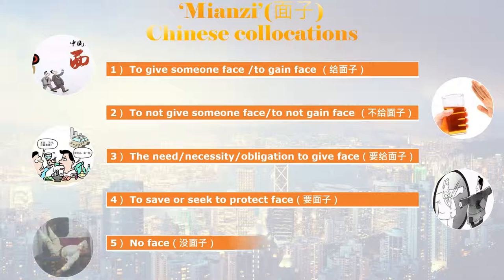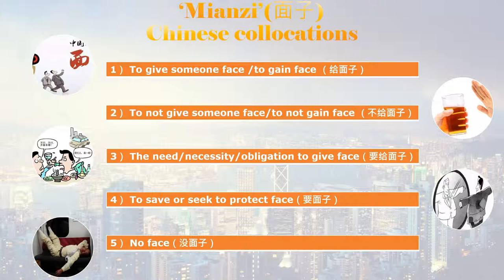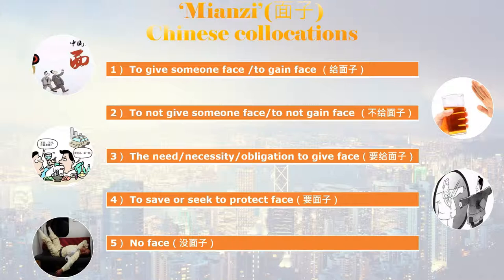Number five: 没面子, which means 'having no face,' in the sense that your actions have cost you your self-image, self-dignity, and self-reputation. So if you're completely intoxicated in public, like this guy over here, or if you're going to a meeting in that particular state, you're considered to have no face. So those are the five most common examples of how face, or 面子, is used in Mandarin Chinese.